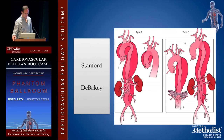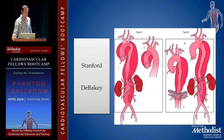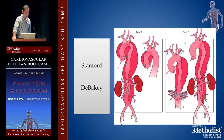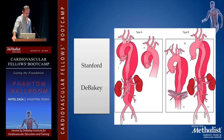There are two main classifications that are used. The Stanford classification is very easy: type A is anything that involves the ascending, and type B is anything from the left subclavian ligament down, so the descending aorta. DeBakey is a little more involved but one you should know. Type I involves the aorta from the root all the way down. Type II, probably the less common, involves the ascending. And type III, which involves the descending, can be broken up into A and B.